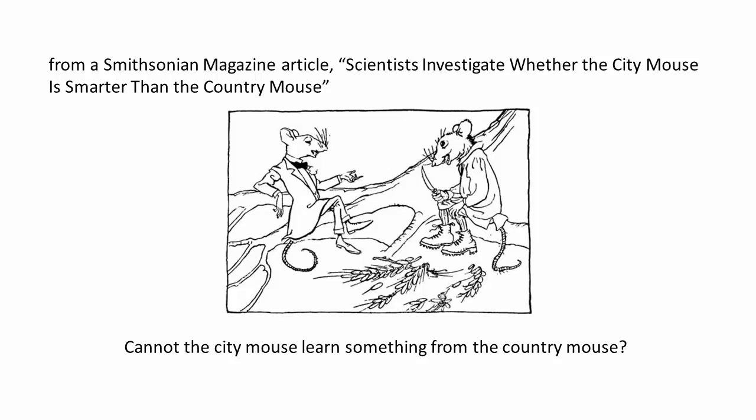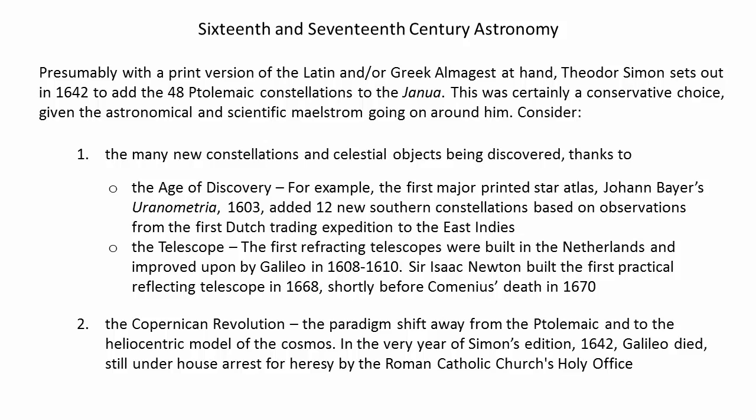Finally, what about when Comenius is significantly out of date scientifically? For example, when he presents a Ptolemaic geocentric view of the cosmos. The vocabulary — the names of the planets, the constellations, the associated gods and goddesses — is still valid, so why not use the anachronism as a teaching opportunity, about antiquity, about Comenius' era, or our own? Since the intention of these books was to teach about the world itself, we have occasionally updated their encyclopedic value, as with these informational slides about the epochal transition from geocentric to heliocentric astronomy that occurred under Comenius' very nose.